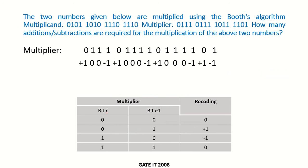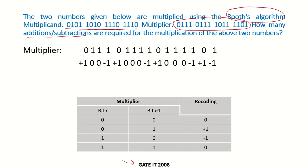Let's take another example. This was a GATE question: two numbers are multiplied using Booth's algorithm — the multiplicand and multiplier are given. How many additions and subtractions are required? The number of additions and subtractions depends on how many plus 1 or minus 1 bits are in the recoded multiplier. Since they are using Booth's algorithm, the multiplier will first have to be recoded.